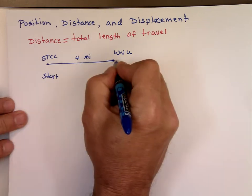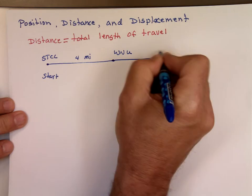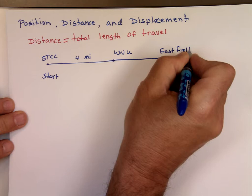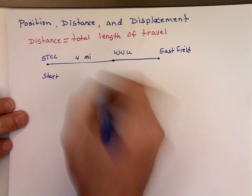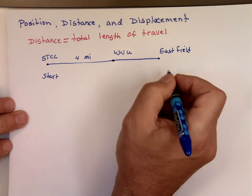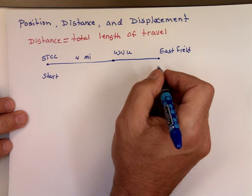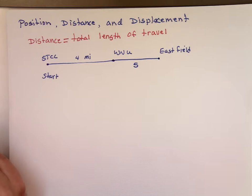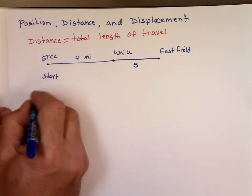Then from there you decide to go to Eastfield Mall. How far is Eastfield Mall from WinneU? Maybe another five miles.